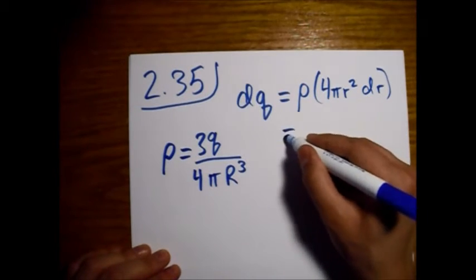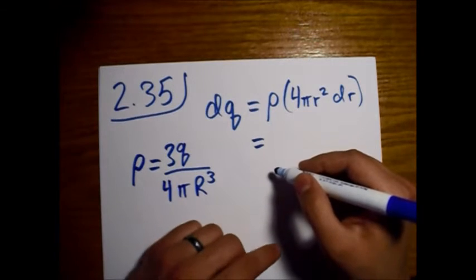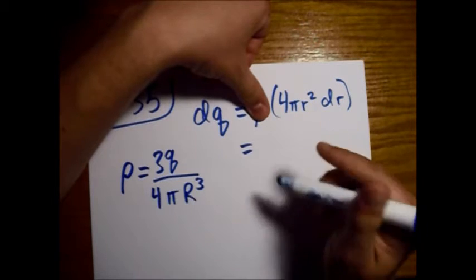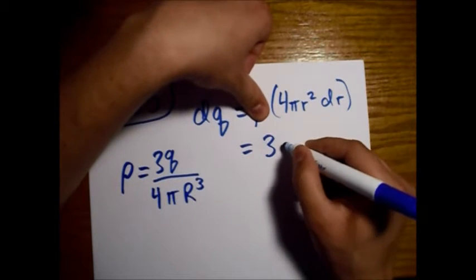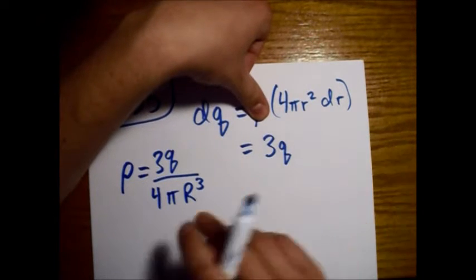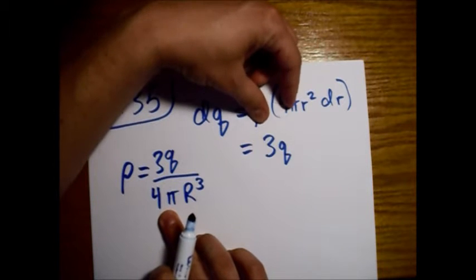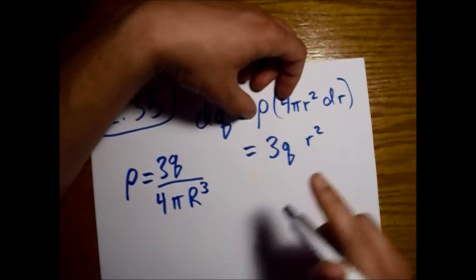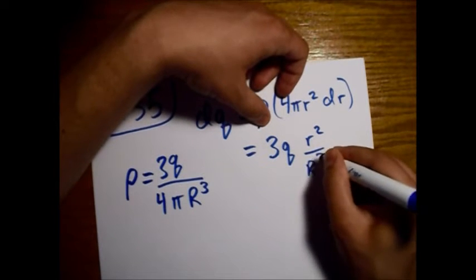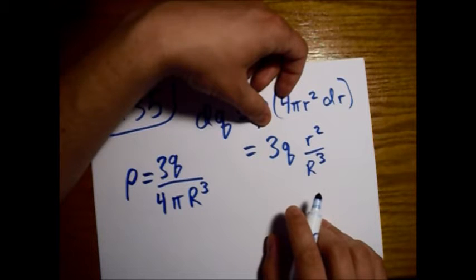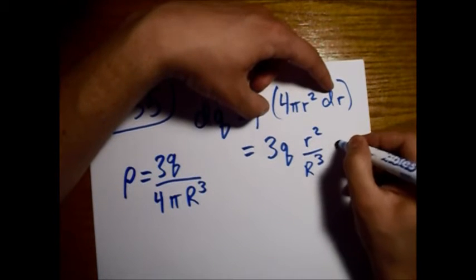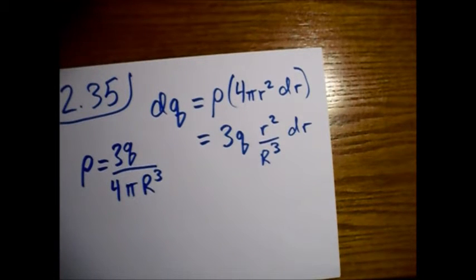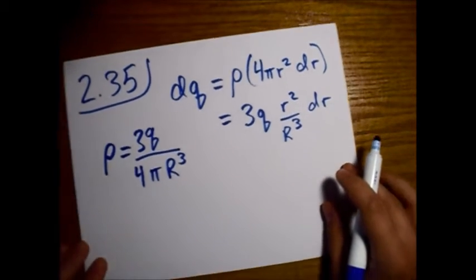For this dq, when we plug in the rho, we're going to get a 3 and a q, and then these 4 pi's are going to take each other out. We have a little r squared and a big R cubed on the bottom. Now we just have to multiply by the dr. This is what dq is.